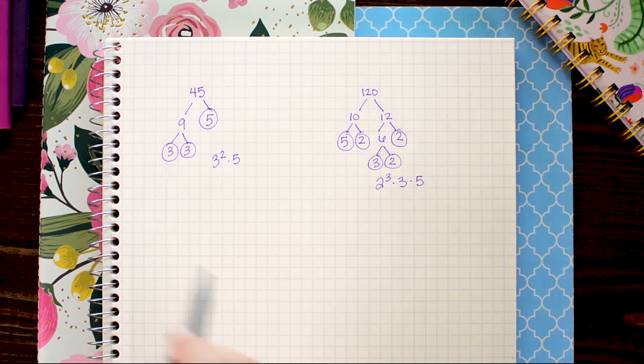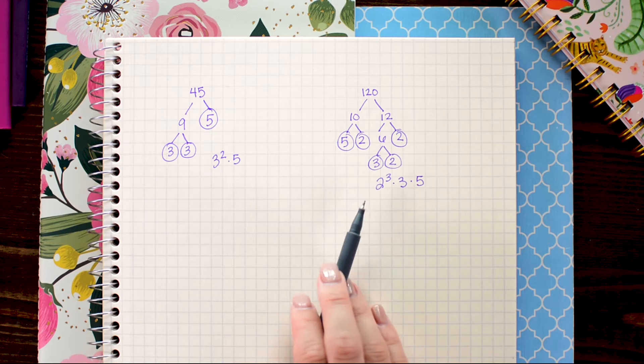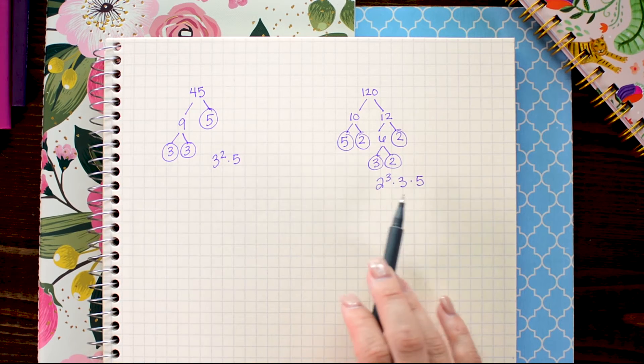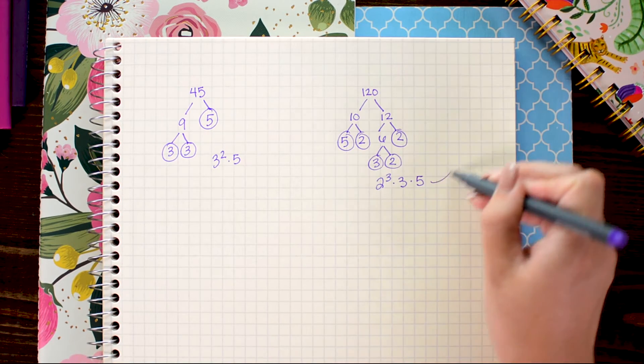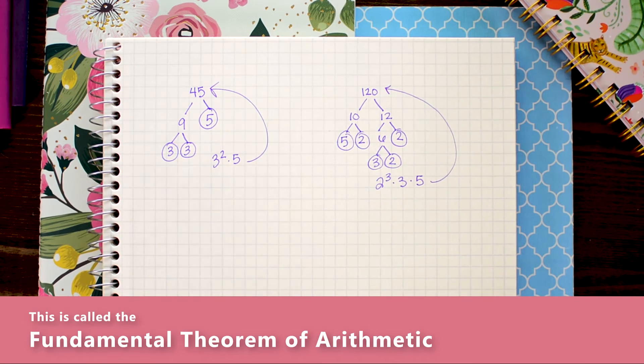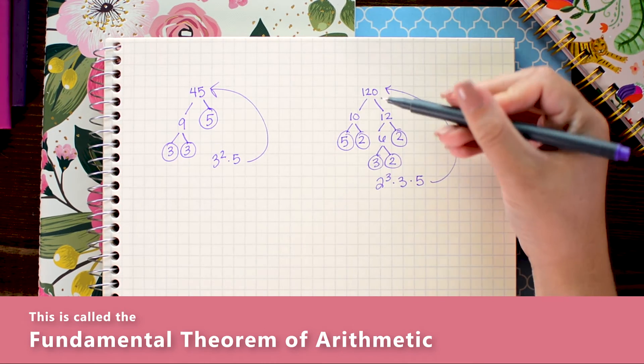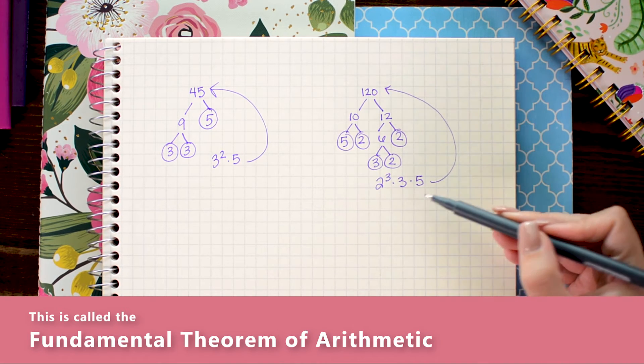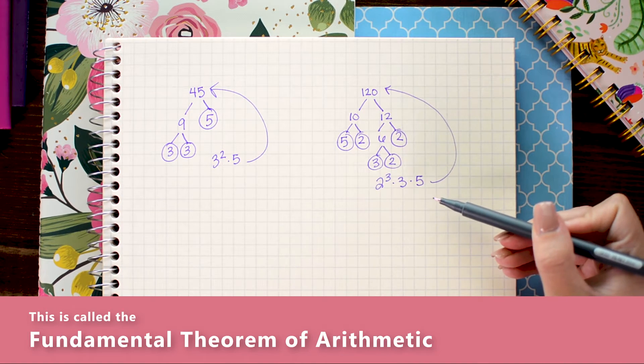Now the cool thing about these prime factorizations is they're the prime numbers that if I multiply them all together I get the number I started with. So it is kind of like the unique signature of 120 is 2 cubed times 3 times 5. Those are its building blocks.